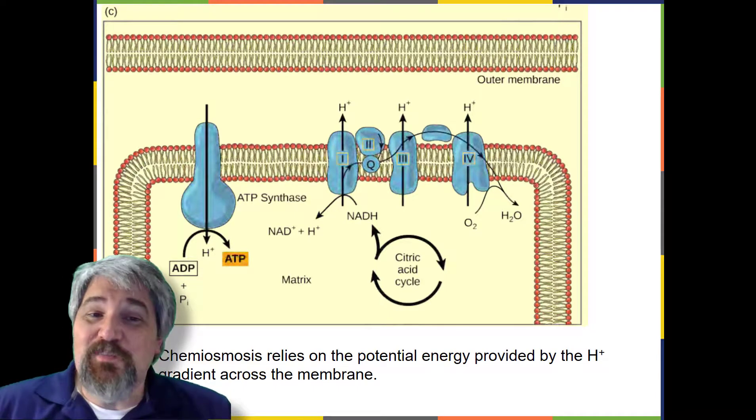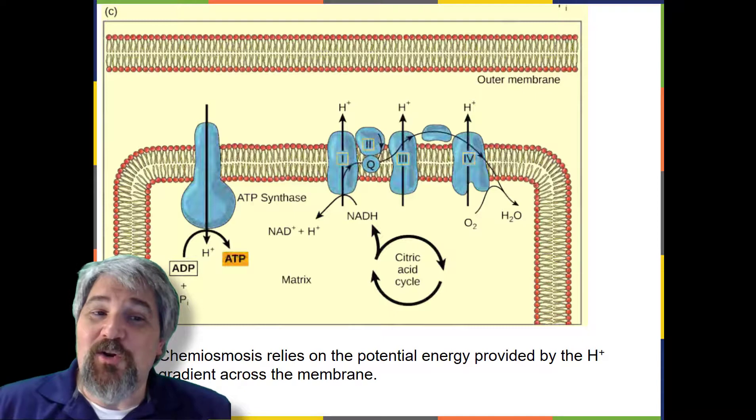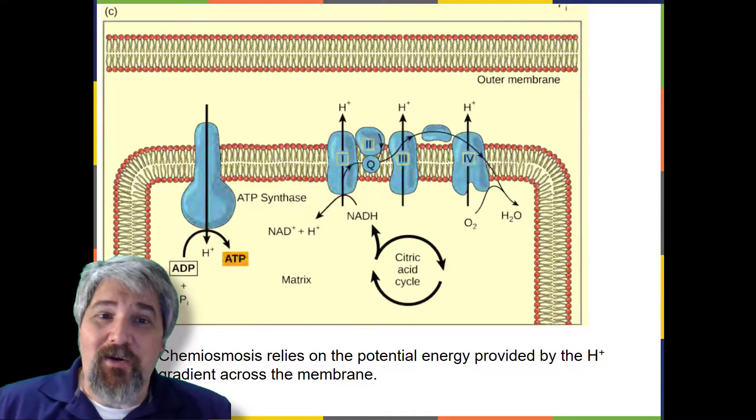The electron transport chain is present in multiple copies in the inner mitochondrial membrane of eukaryotes and in the plasma membrane of prokaryotes.